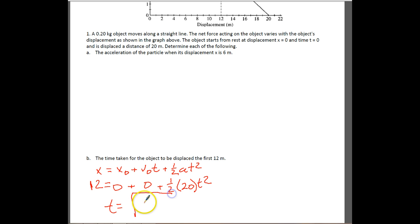If we rearrange this for time, it's going to be time is equal to the square root, let's make that look a little better, of 2 times 12 all over 20, and that answer is 1.1 seconds. So our time for that object to be displaced over to the 12 is about 1.1 seconds.